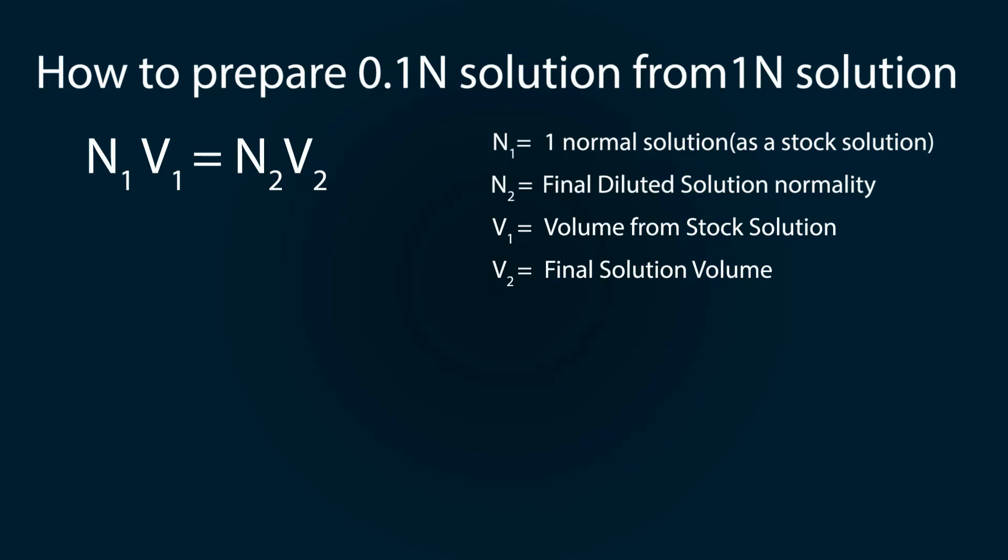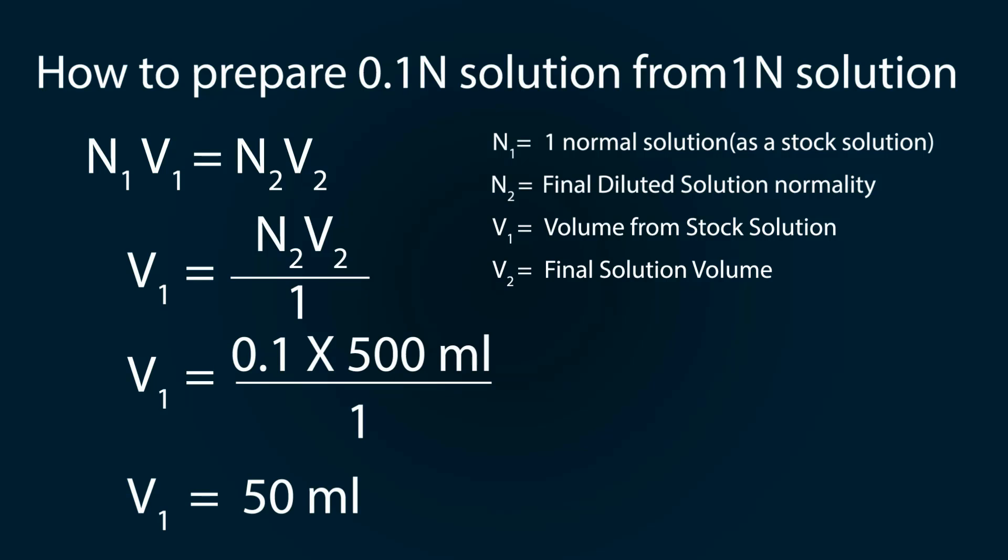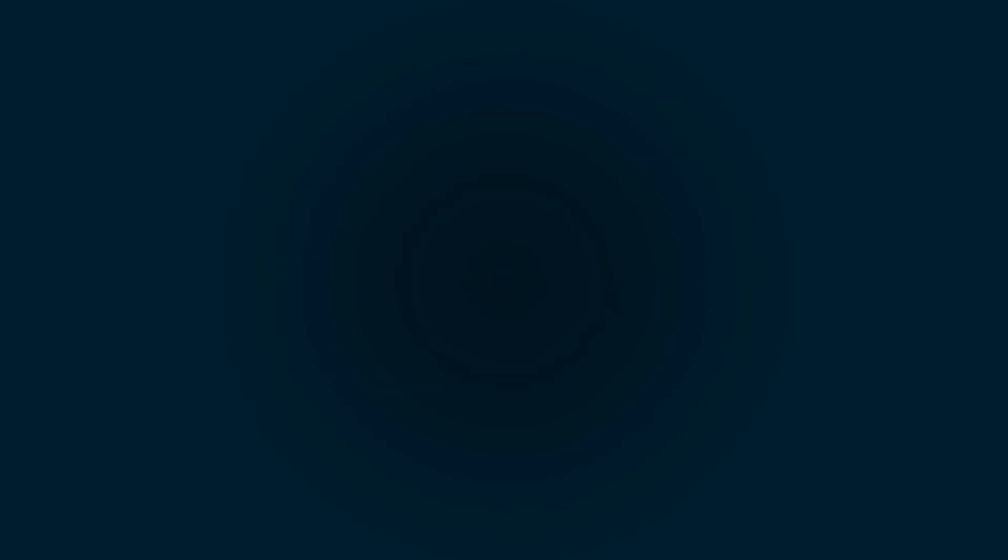Let's start the calculation. V₁ = N₂V₂/N₁, so V₁ = 0.1 × 500 ml / 1 = 50 ml. You need to pipette out 50 ml of prepared one normal solution and put it into the measuring flask.